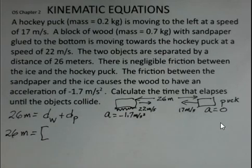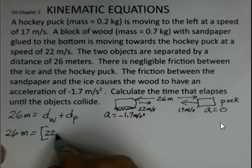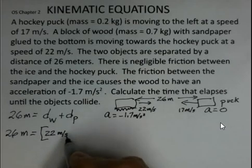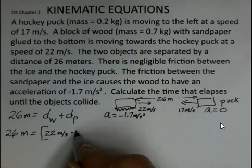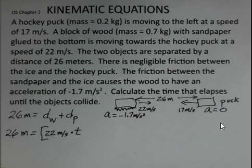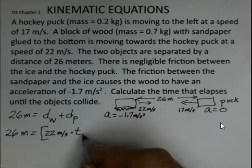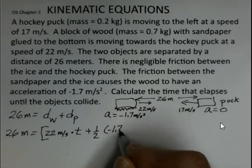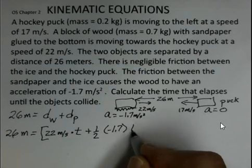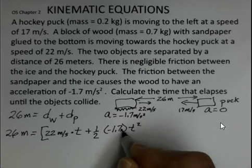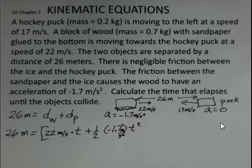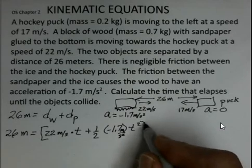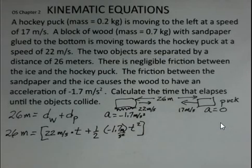How will I calculate those distances? Well, 26 meters, and I'm going to put brackets here. This is now the distance that the wood travels. It's going at 22 meters per second and it's going to travel until they collide, t will be the time until they collide, but it has an acceleration to it, a negative acceleration, -1.7 meters per second squared.